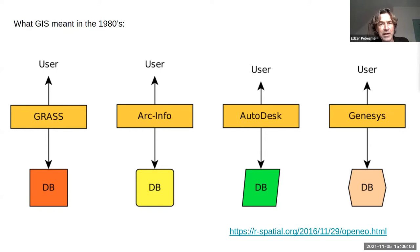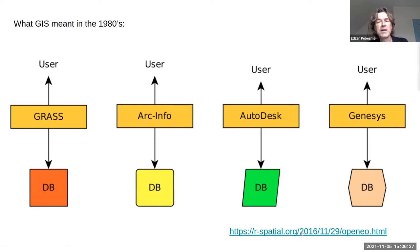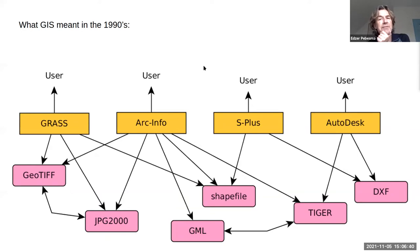In the 80s when I started studying, the GIS landscape basically looked like this: you had a GIS which was big software on a big machine with a database in the back end, and absolutely no possibility of going from one system to another or trying different things on different machines. That was simply not done.